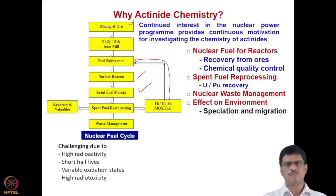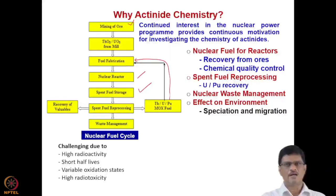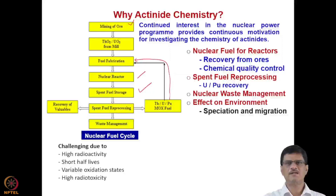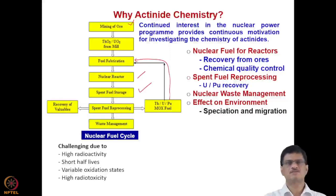The raffinate coming out of spent fuel reprocessing is taken out for the nuclear waste management program. Actinides and fission products are vitrified and kept in deep geological repositories — there also the chemistry of actinides is important, particularly the minor actinides like americium, curium, and neptunium. Their chemistry needs to be known so that nuclear waste management can be carried out very efficiently. The effect of hazardous actinides with large radiotoxicity on the environment is also very important to understand.